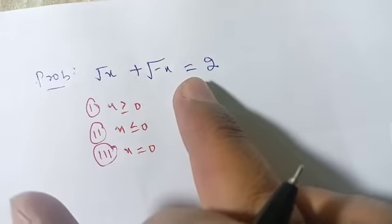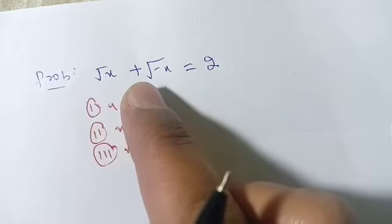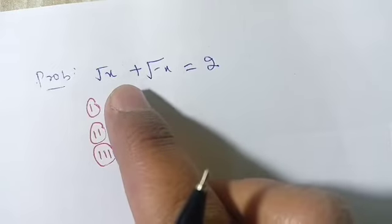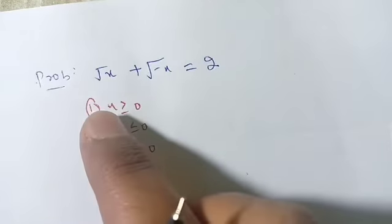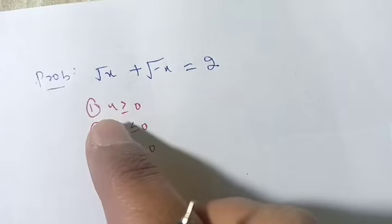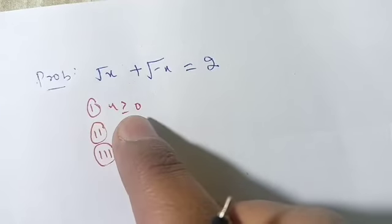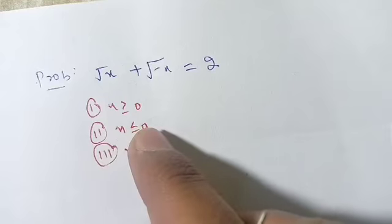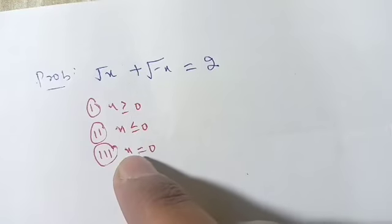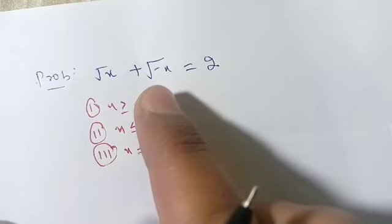x plus square root of minus of x is equal to 2. We will find whether this equation has a solution or not. From this equation we may imagine that the value of x is either greater than or equal to 0, less than or equal to 0, or the value of x is equal to 0.